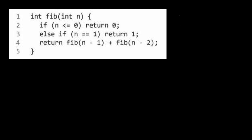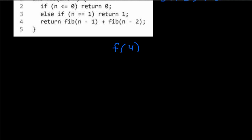Now let's do the classic Fibonacci series. If you don't know, it's a series where two numbers sum to the next: 0, 1, 1, 2, 3, 5, 8, and so on. This function recursively finds the nth number in the Fibonacci series. If n ≤ 0, return 0. If n equals 1, return 1. Otherwise, return fib(n-1) + fib(n-2). Since this is recursive, the easiest way to visualize it is by drawing a recursion tree. Let's do an example for fib(4).